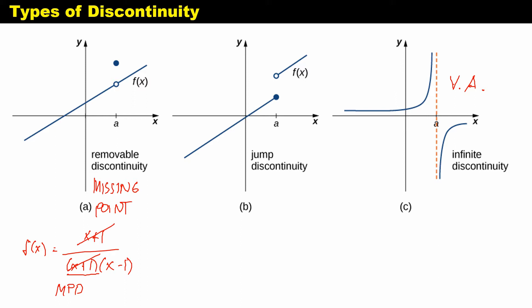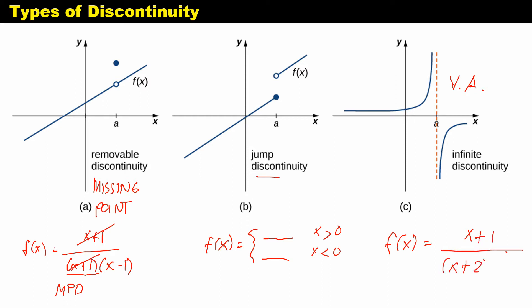Jump discontinuity happens usually when your function is a piecewise function — for example, conditions like x greater than zero or x less than zero. If you are given a piecewise function, that is a jump discontinuity. If you have a function f(x) where you are not able to cancel out any term in the numerator or denominator — no similar terms — then those points of discontinuity are infinite discontinuities, and the values of x equated to zero are your vertical asymptotes.